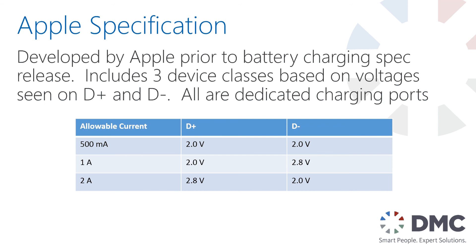On top of all that there's the Apple proprietary specification. Apple released their own charging spec prior to the USB spec being released because they wanted a standard for all their devices. The Apple spec is purely for charging-only ports, such as wall warts, and includes three device classes allowing either a 500 milliamp, 1 amp, or 2 amp power draw. These classes are determined by measuring the voltages on the D+ and D- lines, typically achieved using resistor dividers on the supply voltage.